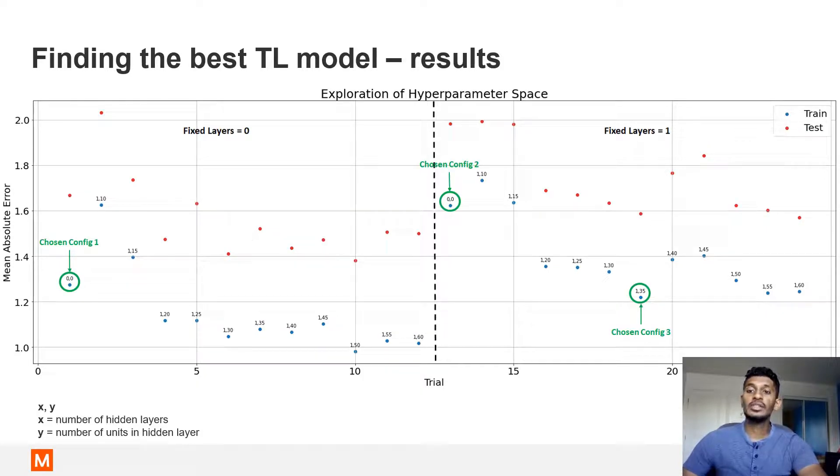For now, we'll focus on the cases with no and one fixed layers. Adding a layer and increasing the units in the new layer tends to improve the error. This trend can be seen up to a point beyond which the mean absolute error plateaus off. Three configurations were chosen as these represent the different schemes that were tried. Chosen configuration one: the base neural network was used to initialize the weights and therefore all parameters were trainable. Chosen configuration two: the weights of the first layer of the base neural network were fixed while the rest of the layer's weights were trainable. Chosen configuration three: the weights of the first layer of the base neural network were fixed, a new layer of 35 units was added, and all the latter layers were trainable. This proved to be the best configuration.